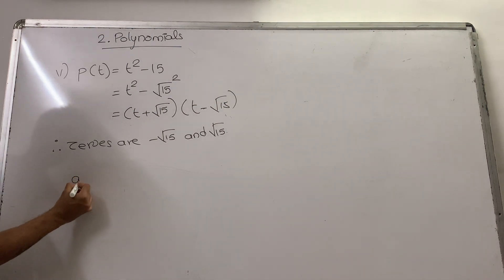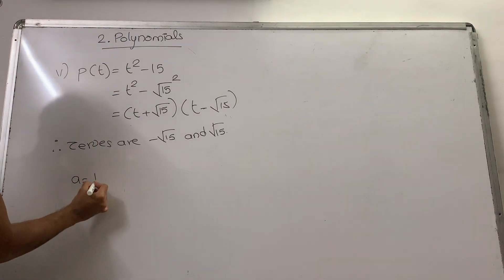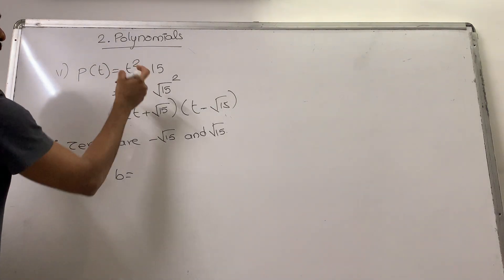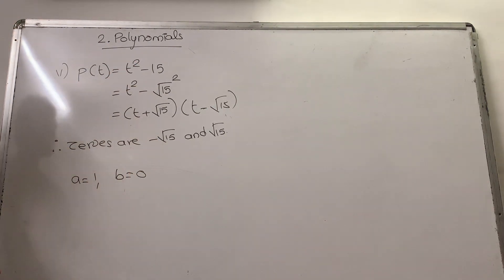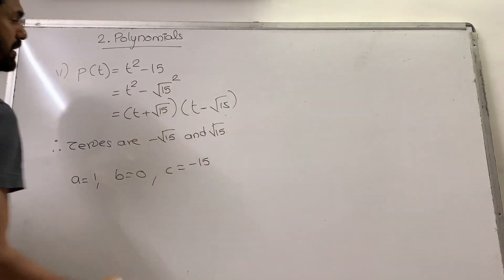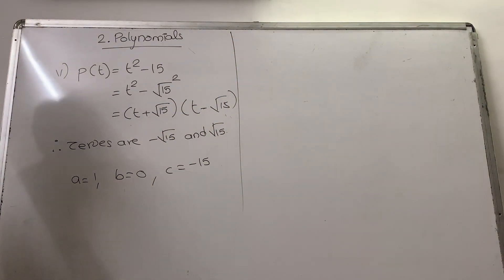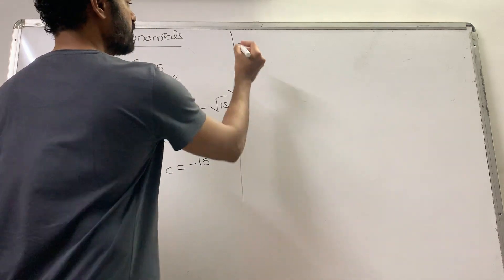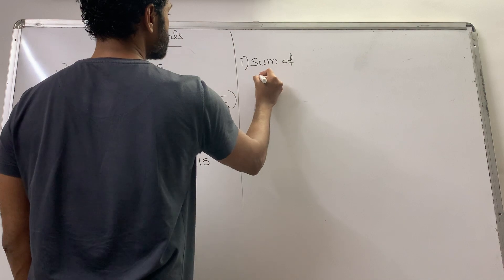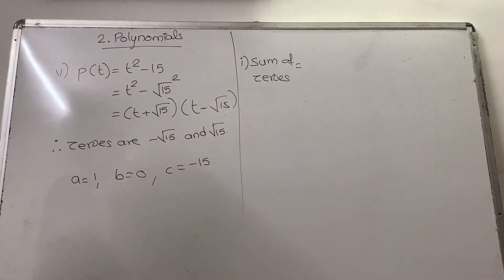Now for the verification part, compare coefficients. A is the coefficient of the degree 2 term, so A = 1. B is the coefficient of the degree 1 term. Since the polynomial does not have a degree 1 term, B = 0. C is the constant term, which is −15. A degree 2 polynomial has two relationships. The first relationship is the sum of zeros.